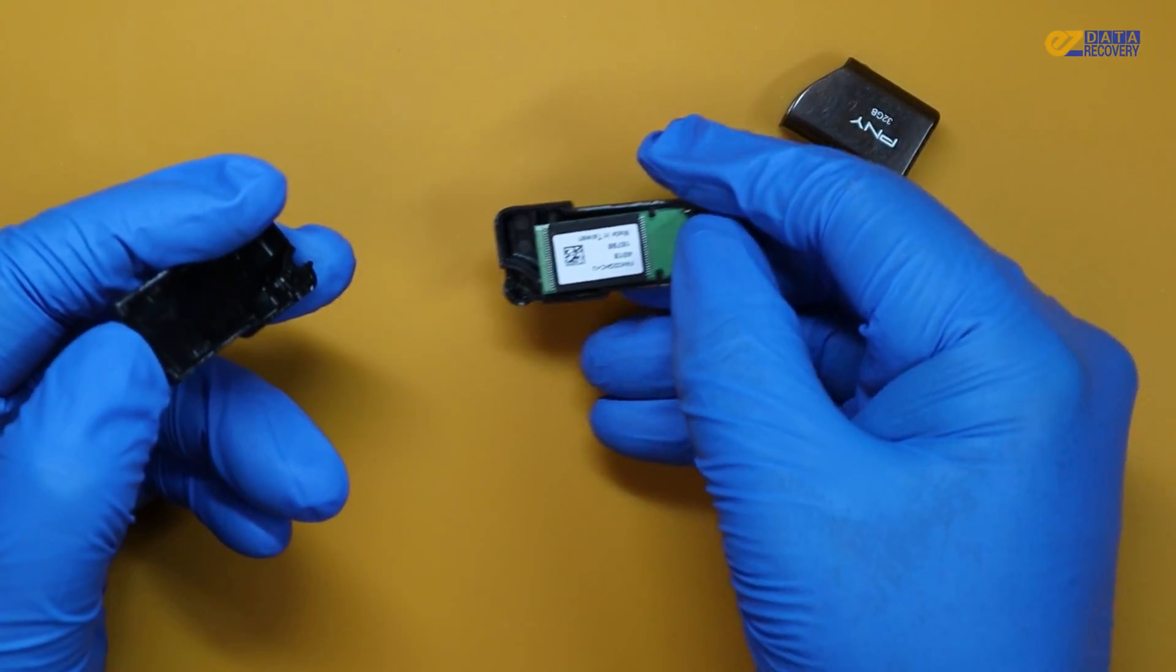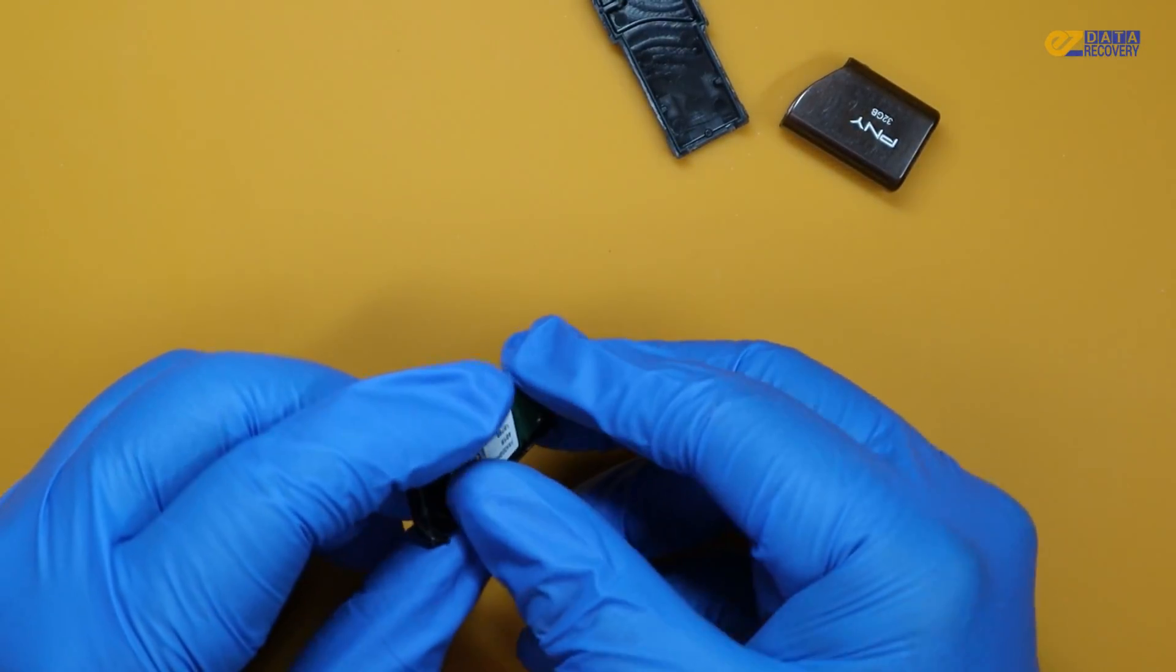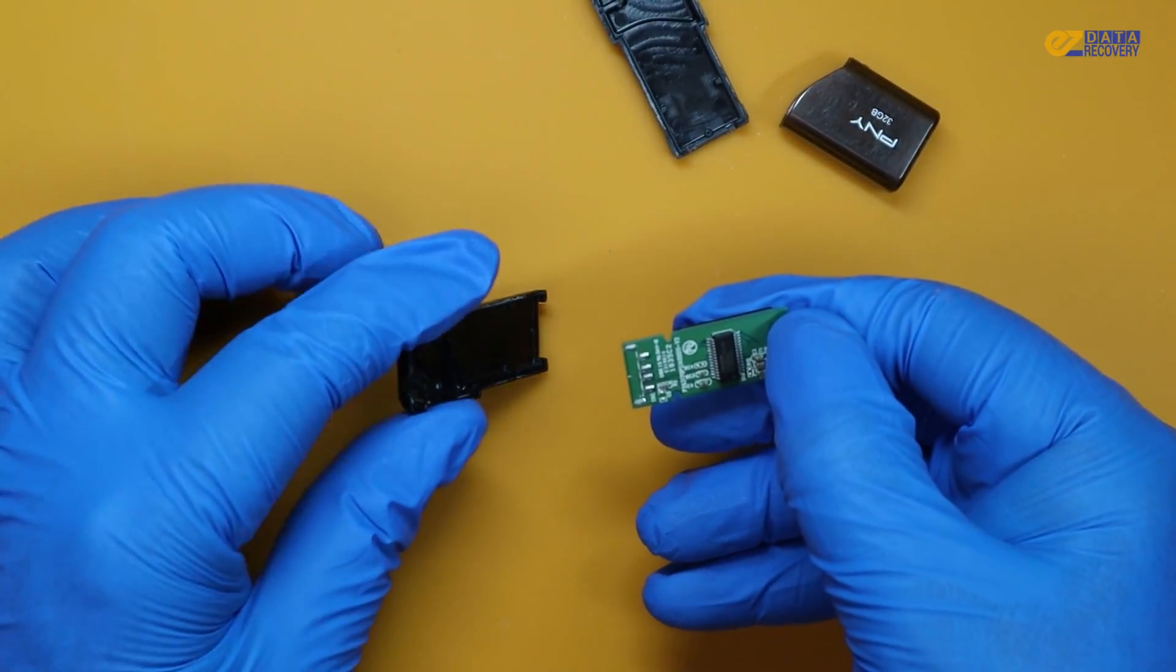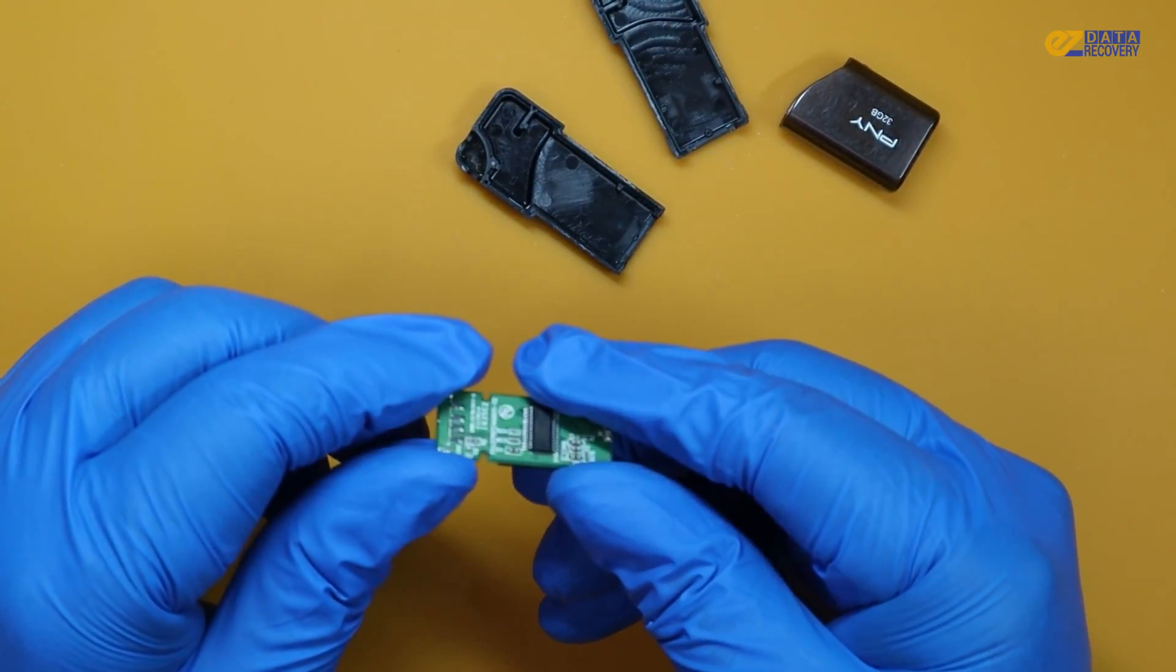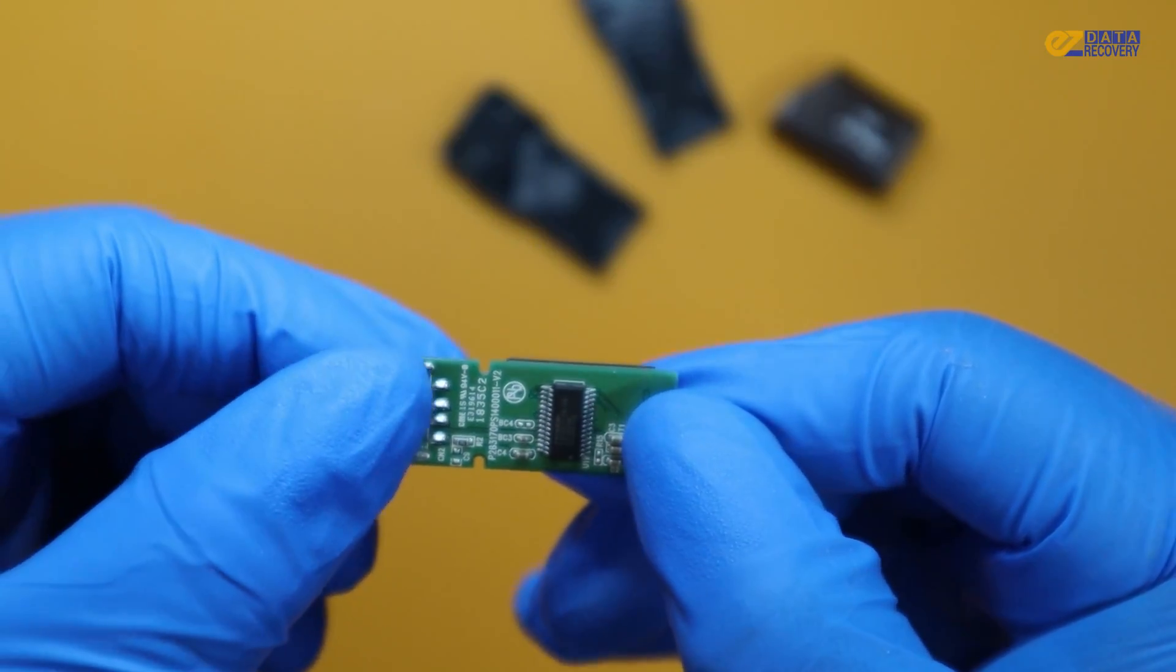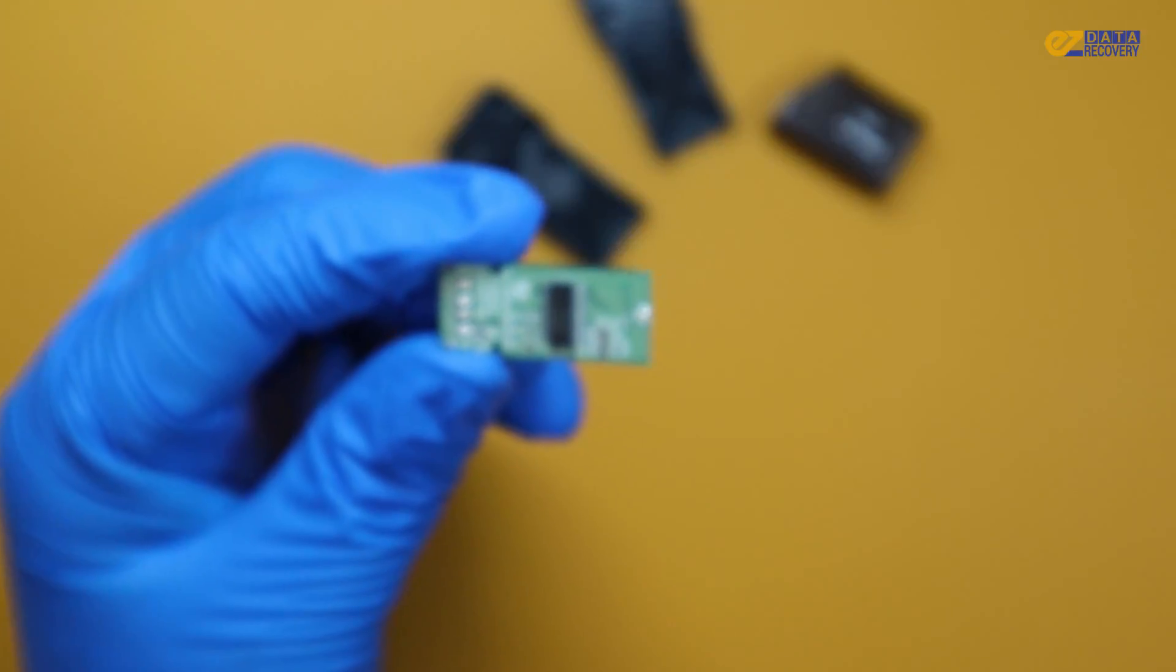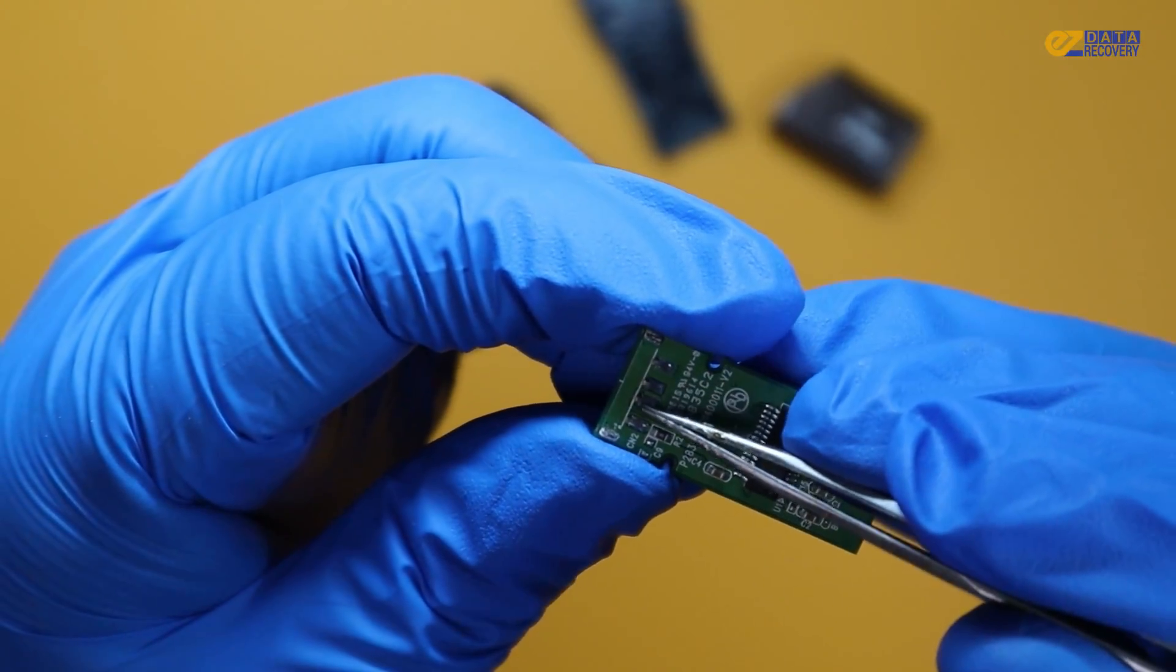Now we just open this up just like a clamshell and we can see the board in there. There we go. Now we have the board out from the enclosure. We can see the four paths that were broken off the connection. It is important for these not to be damaged. Otherwise we need to make traces to repair them.